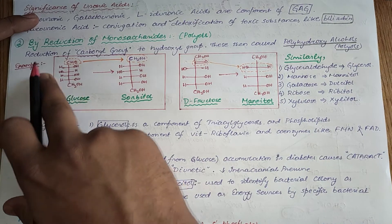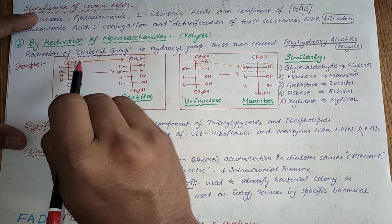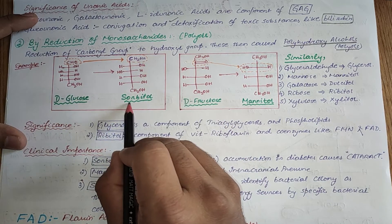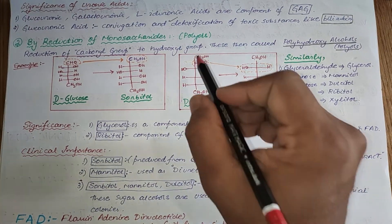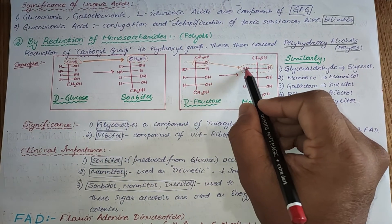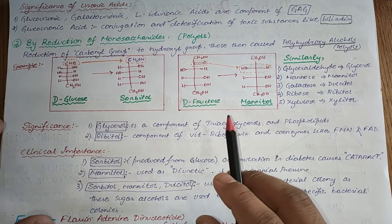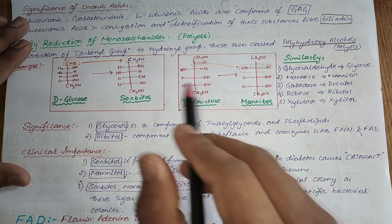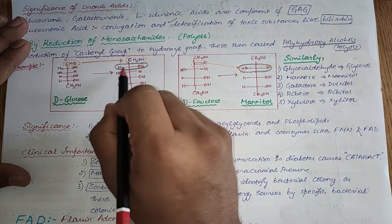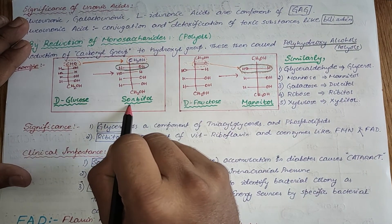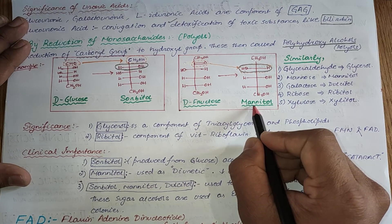For example, when D-glucose has its aldehydic group converted to an alcoholic group, it is known as sorbitol. If D-fructose, containing a ketonic group, is converted to an alcoholic group, it is called mannitol. Sorbitol and mannitol have the same structure with one difference at the second carbon atom: if the hydroxyl group is on the right side it is sorbitol; on the left side it is mannitol.